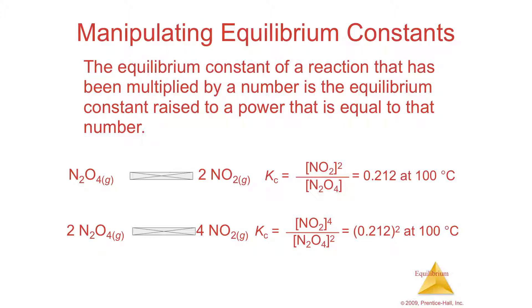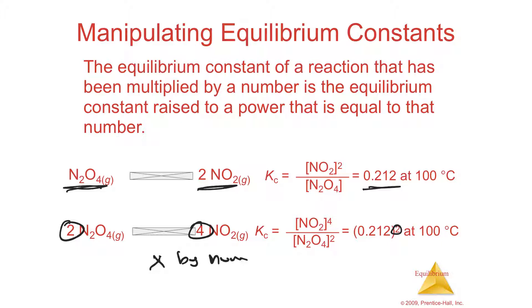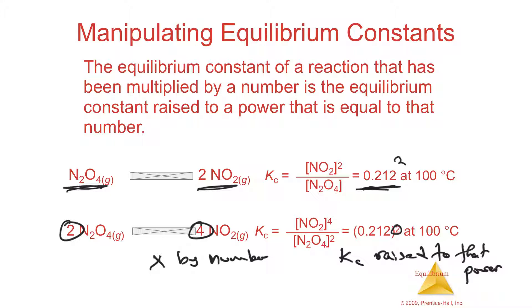Another manipulation you can do is multiply both sides of the reaction by a number. For instance, if you have a reaction with K_c = 0.212 and you multiply both sides by 2, you've doubled the coefficients. Doubling the coefficients means the concentrations in the equilibrium expression are now raised to the power of 2 — so your new K_c becomes (0.212)². If you multiply by any number n, your K_c is raised to the nth power.